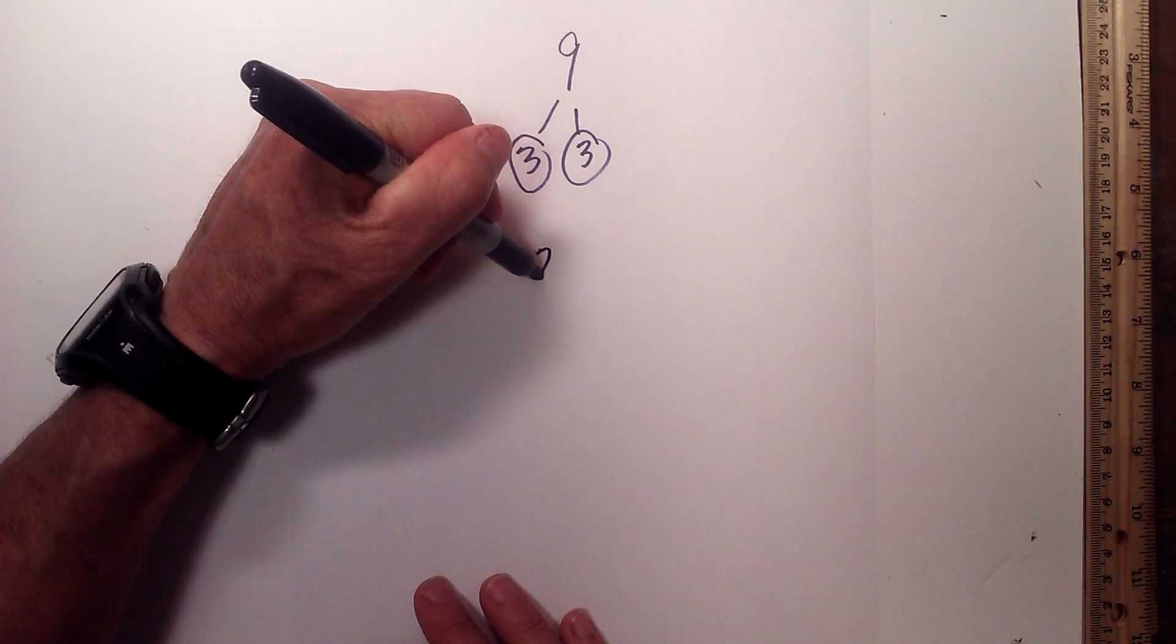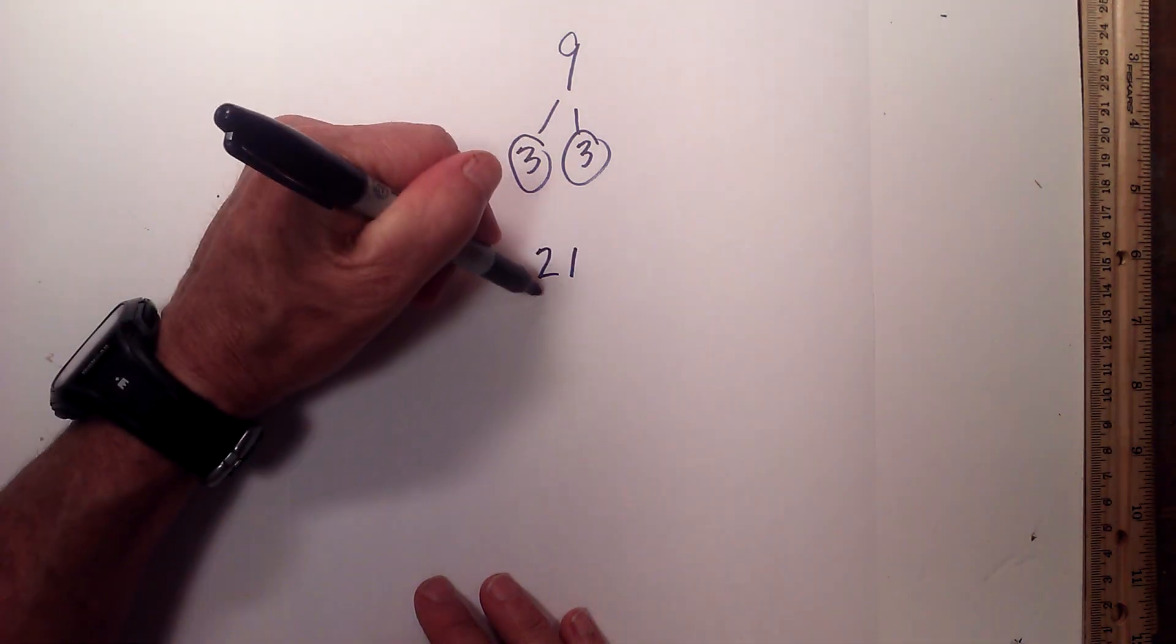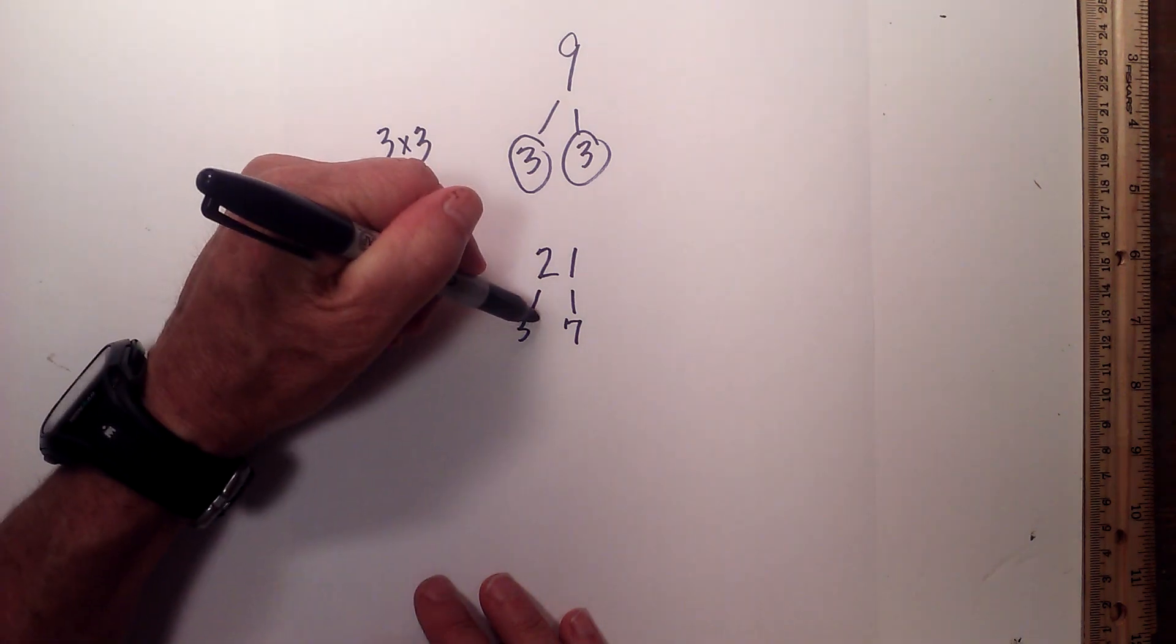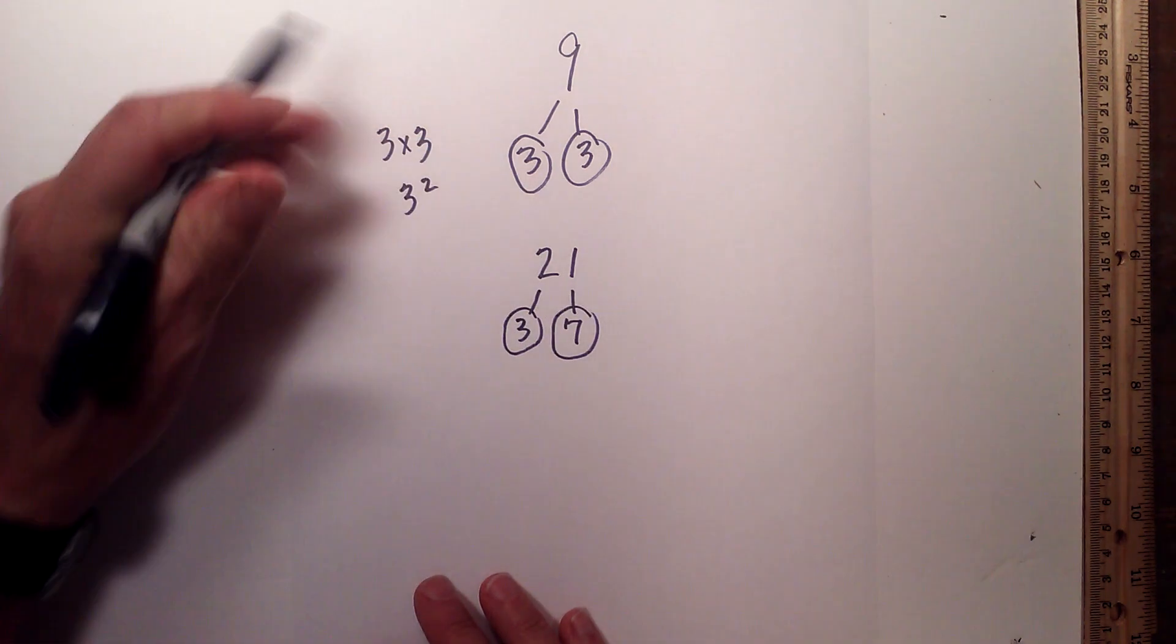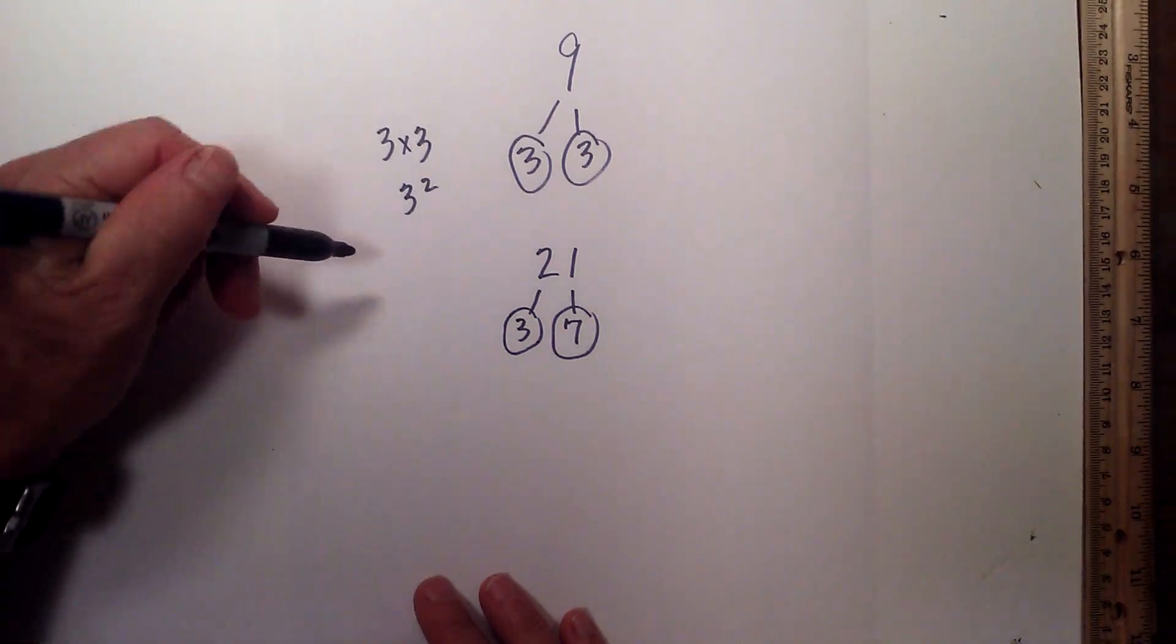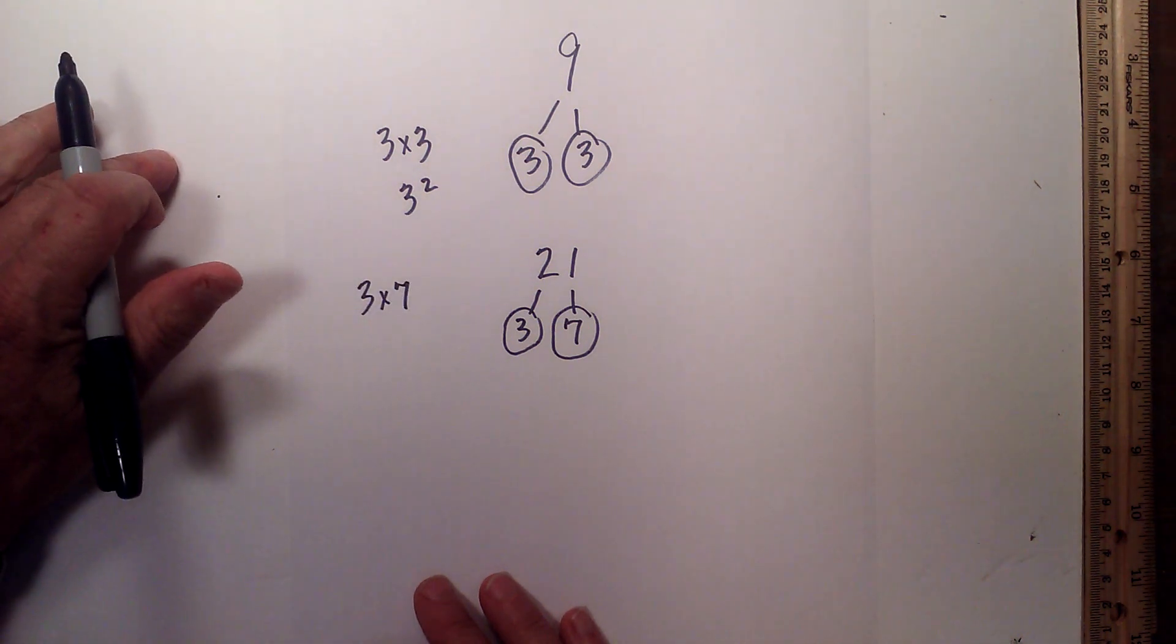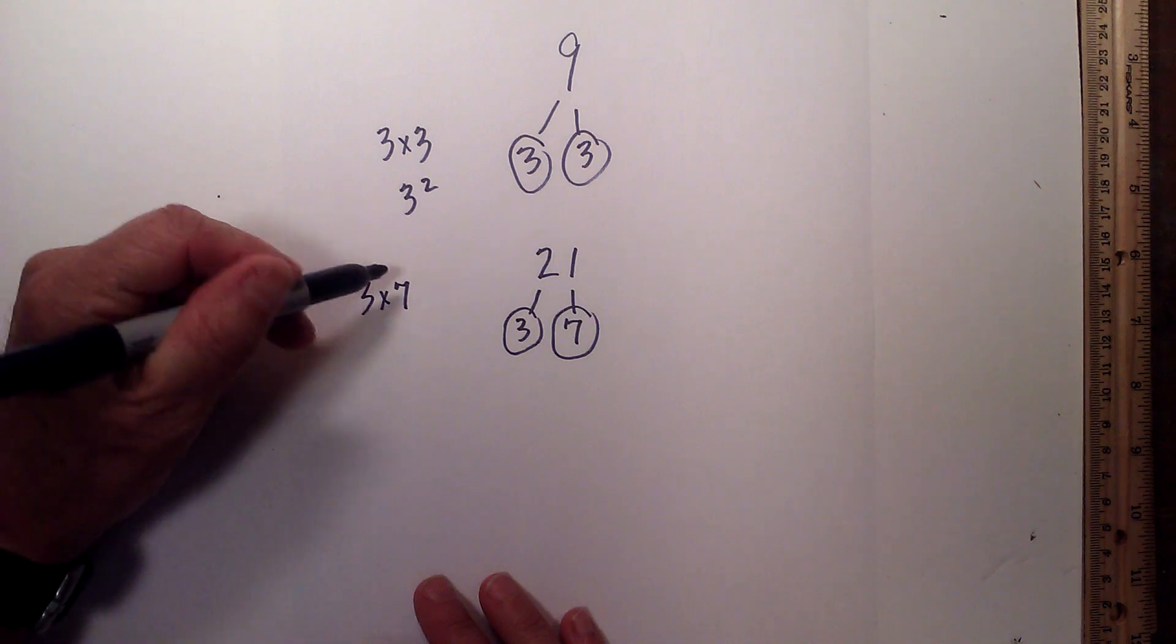Now let's look at 21. 21 is 3 times 7. I will circle both of them because they are both prime. The prime factorization of 21 is 3 times 7.